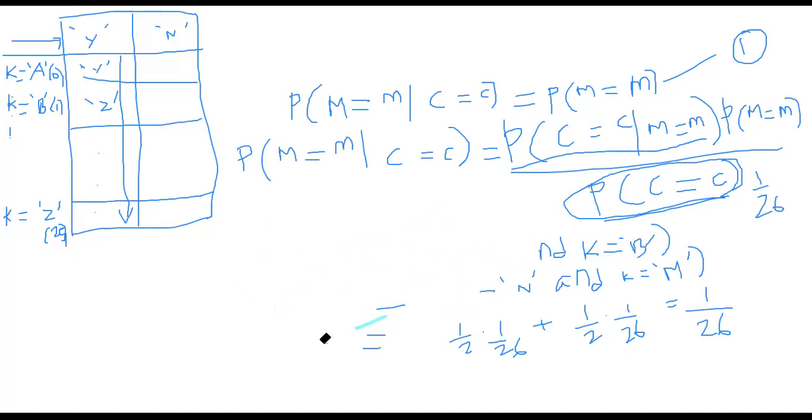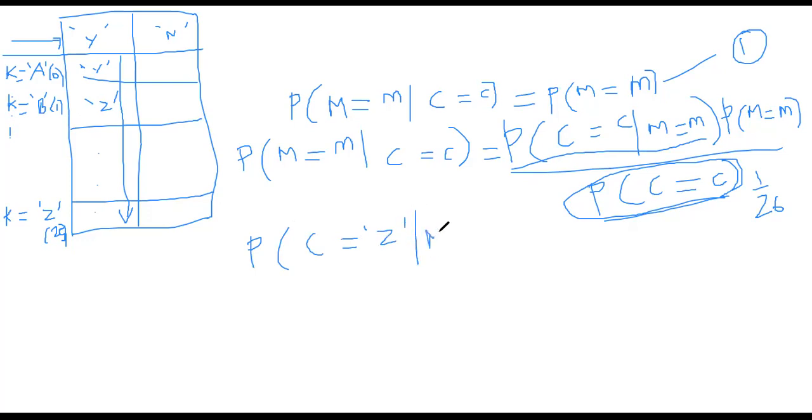Let me show you how to compute the other component. We need to compute probability that C is equal to Z, given that M is equal to Y. That's the reverse component. So what I'm going to do is I'll compute now probability of ciphertext being Z, given that my message is Y. So given that message is Y means I just have to pay attention to the first column of my matrix. This is the first column of my matrix.